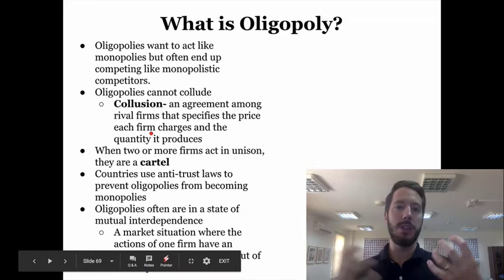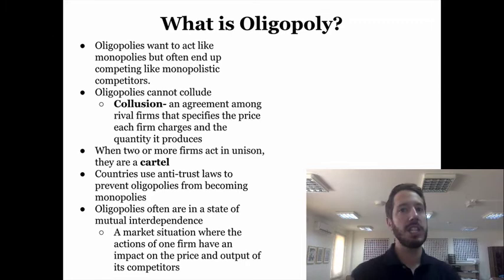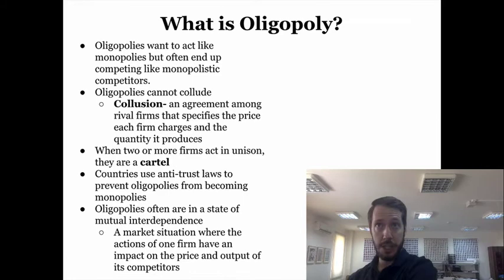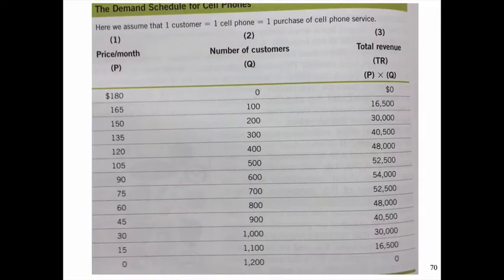Oligopolies are also in a state of mutual interdependence — they really depend on one another and their actions have to reflect what the others are doing. For example, if one cell phone company offers a more attractive package, the other cell phone firms have to do the same. Because of their differentiated products, if they don't respond, more consumers will go to that competitor. So they really do follow similar strategies: if one does something, the other will do something in response because there are only a few options.